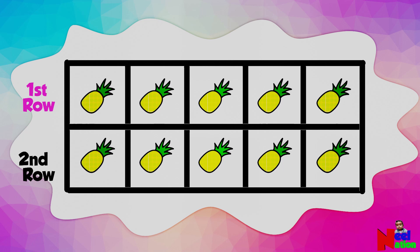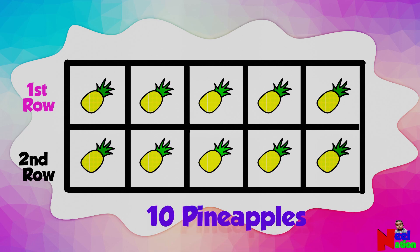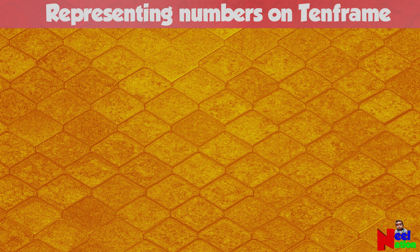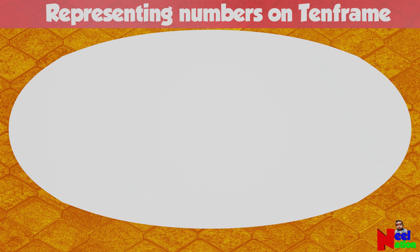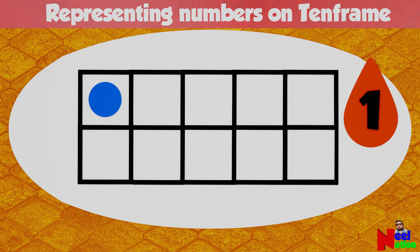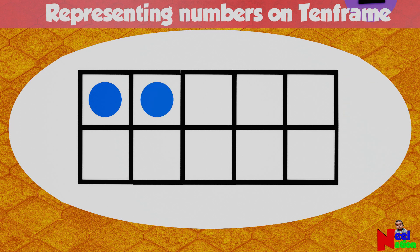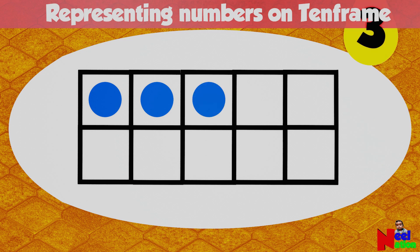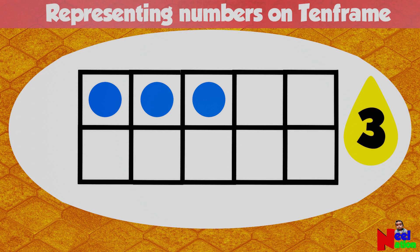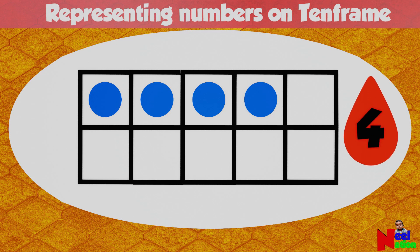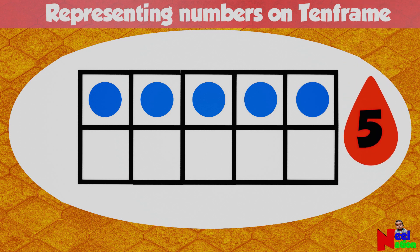Now you have 10 pineapples. Can you identify the number on the 10 frame? The 10 frame shows the number one. The 10 frame shows the number two. The 10 frame shows the number three. The 10 frame shows the number four. The 10 frame shows the number five. When you fill the first row, you have five objects.